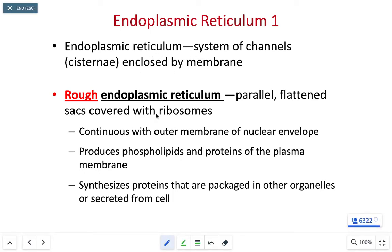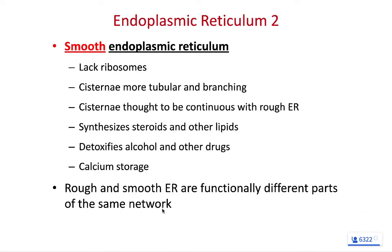Think of rough ER as endoplasmic reticulum covered in ribosomes that focuses on making proteins which are secreted from the cell. The ribosomes on the rough ER will produce proteins that are secreted into the rough ER, and those proteins will eventually make their way outside of the cell, or at the very least, into the cell membrane.